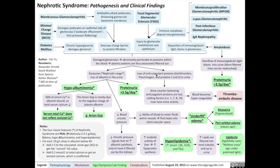The second main pathophysiological process triggered by nephrotic syndrome is the loss of anticoagulant proteins — such as antithrombin, plasminogen, and protein C and S — into the urine. Since these counterbalancing anticoagulant proteins are lost, clotting factors such as factors 1, 7, 8, and 10 have much more activity in the bloodstream. The blood becomes hypercoagulable, resulting in an increased prevalence of thromboembolic disease.